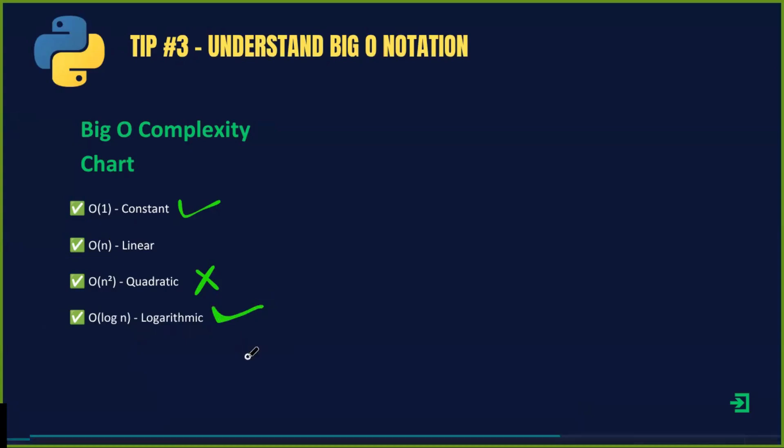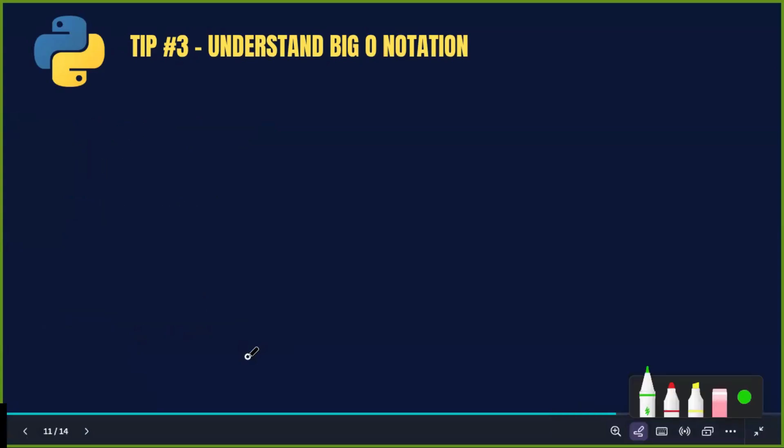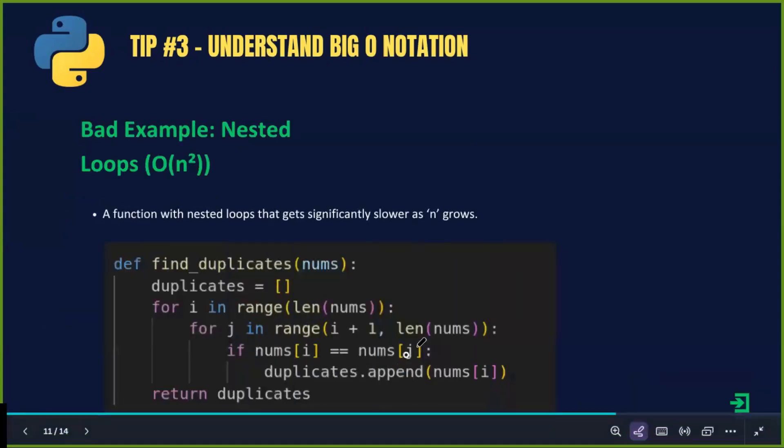Now, let's see an example. Here is a function that finds duplicate values using nested loops. This approach has Big O(n²) complexity, meaning it gets significantly slower as the list grows.